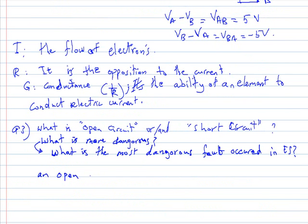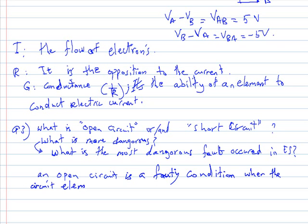An open circuit is a faulty condition where the circuit element offers an impedance, a resistance approaching infinity. Means R is equal to infinity. For example,